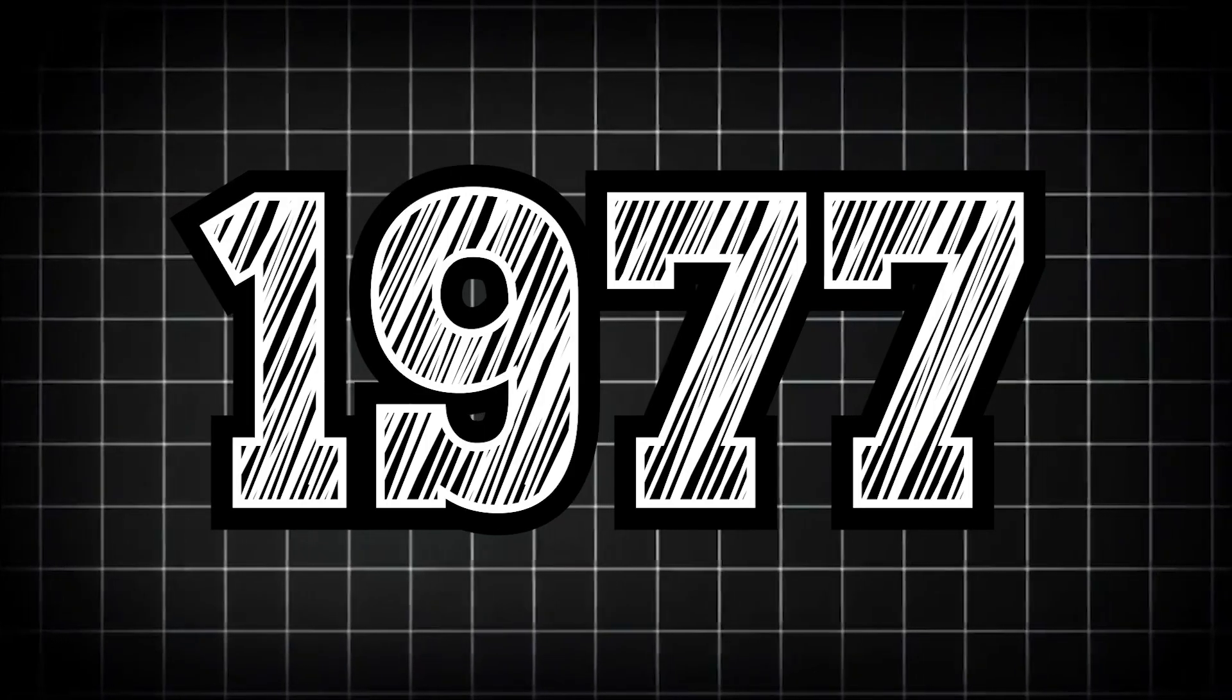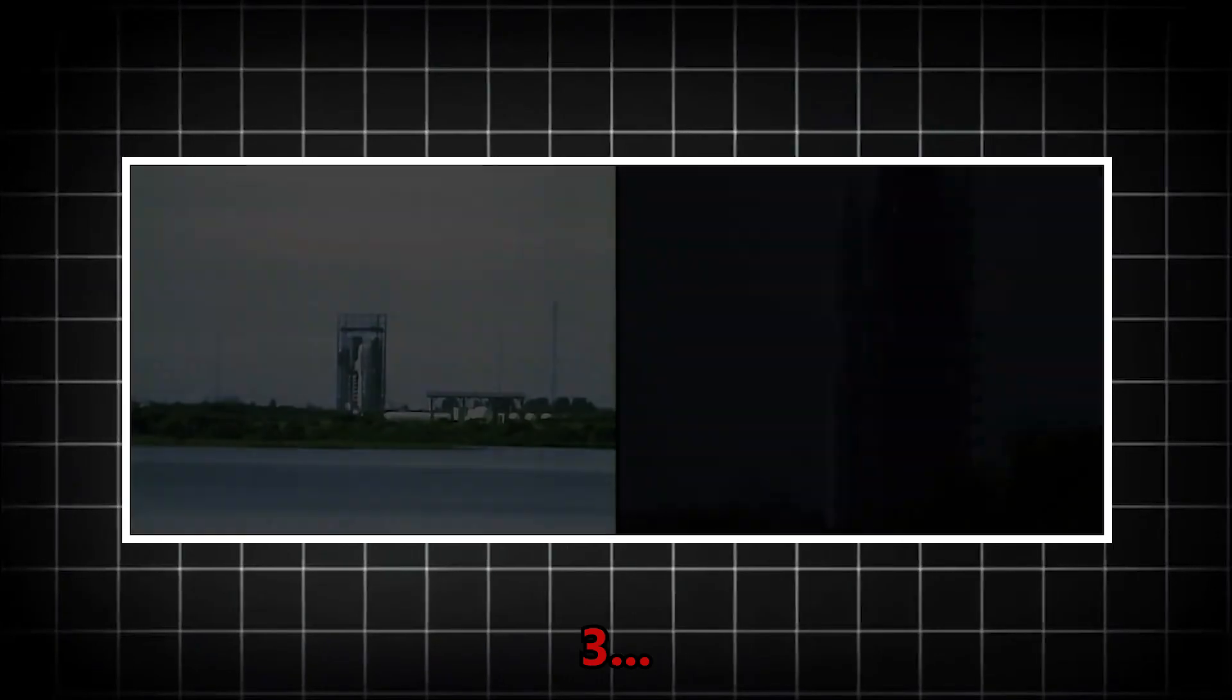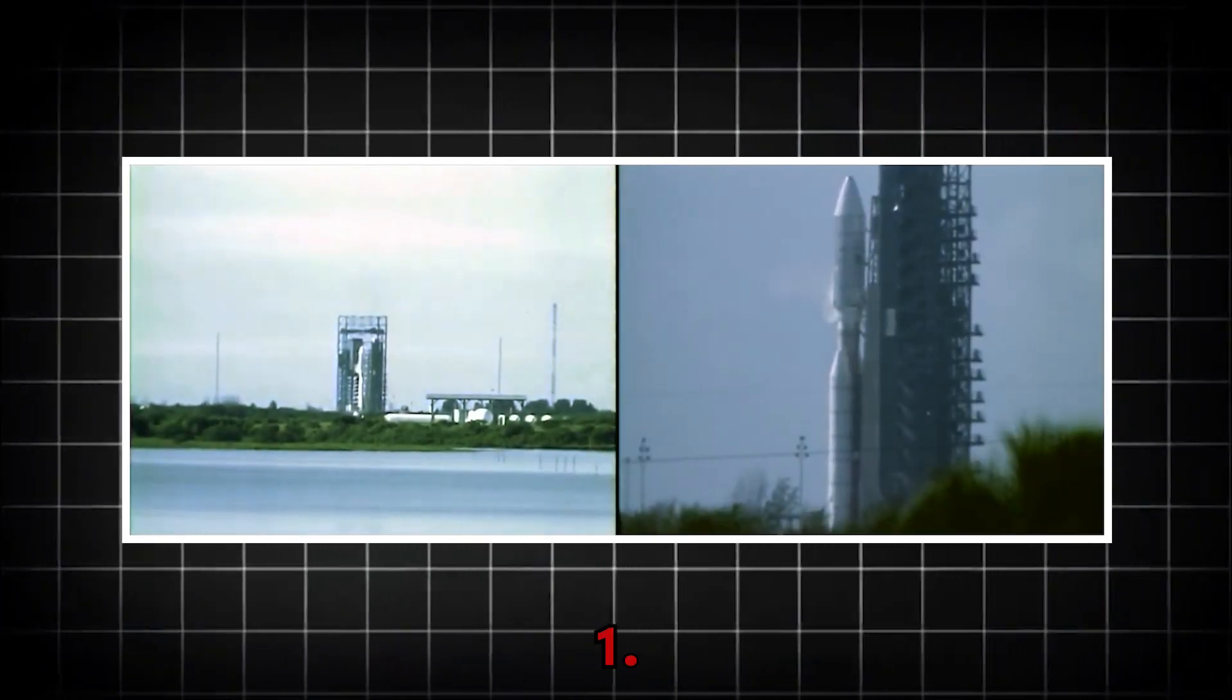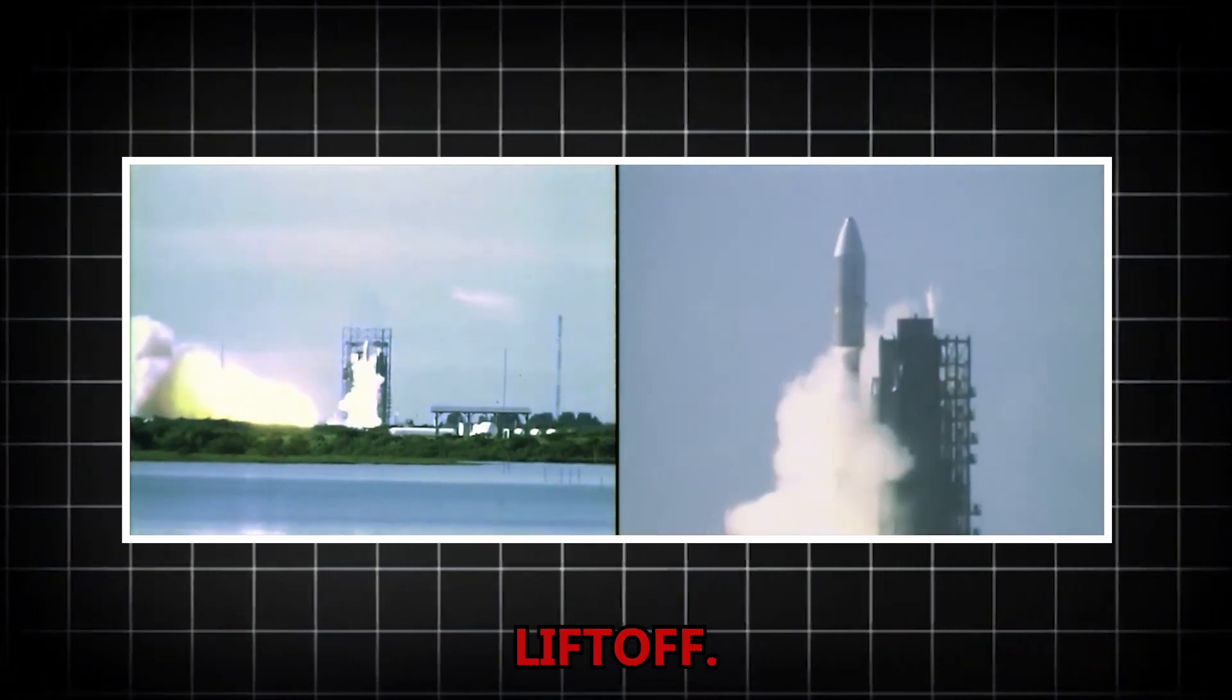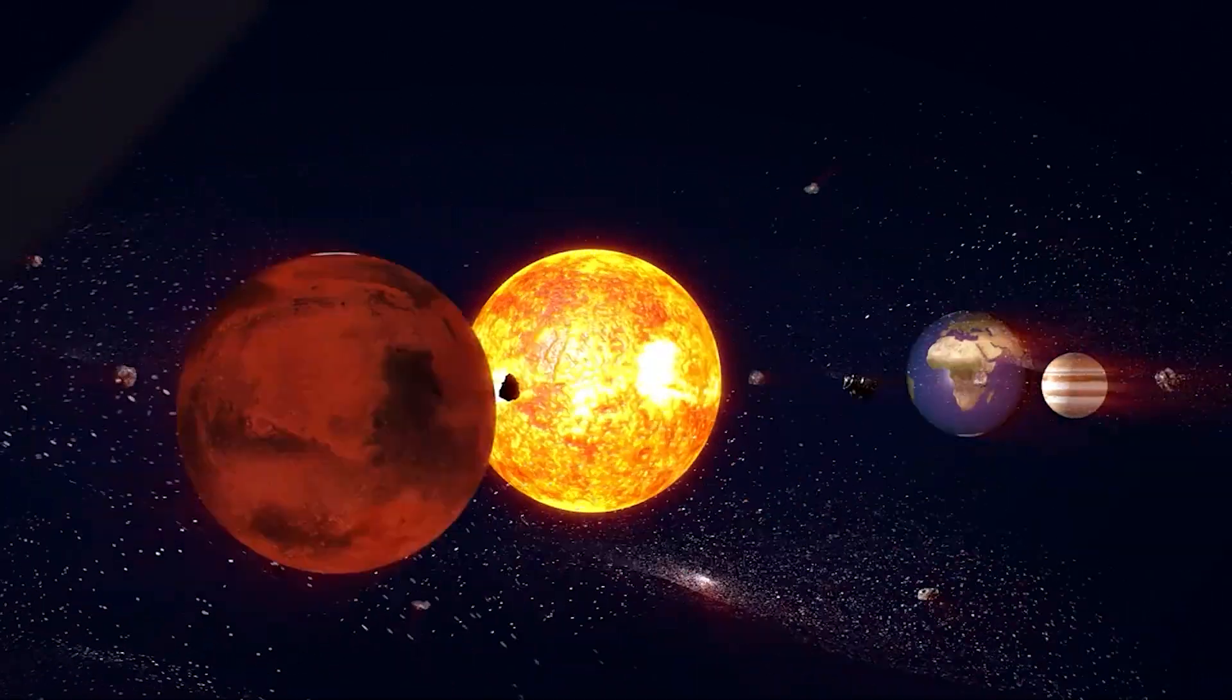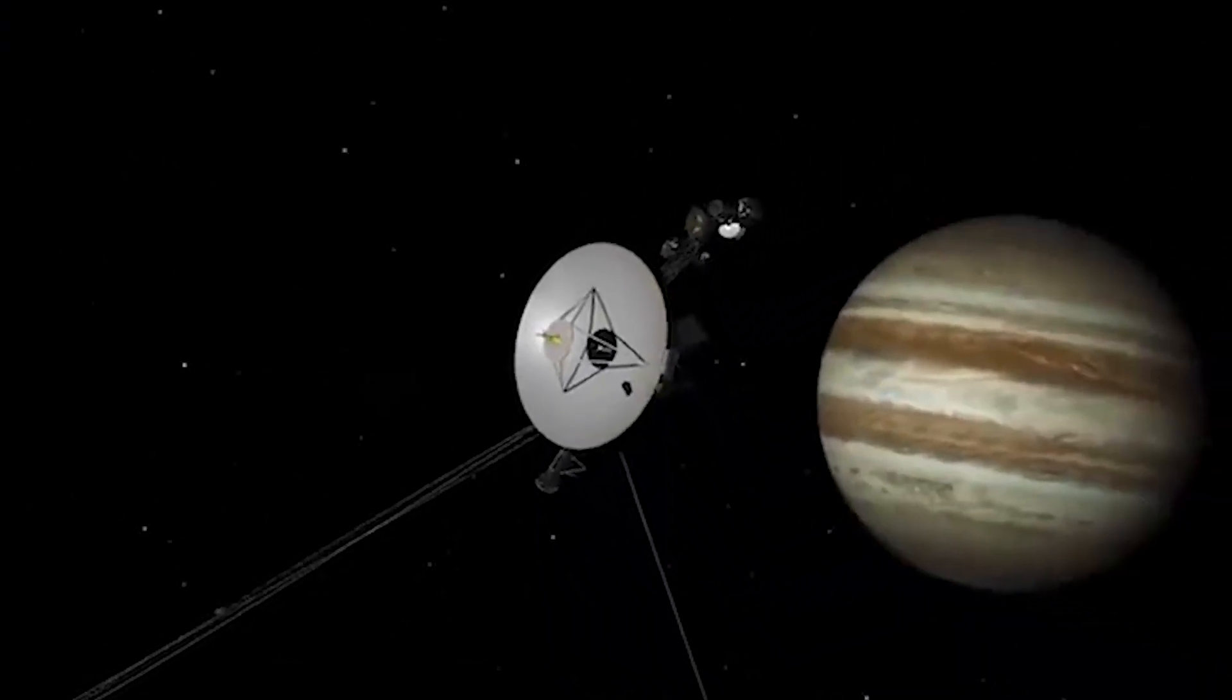Back in 1977, Voyager 2 launched with a daring mission. Three, two, one. We have ignition, and we have liftoff. To visit the giant planets on the edge of our solar system, then keep going into the great beyond.